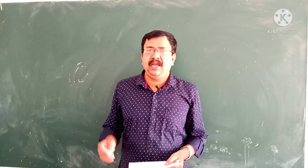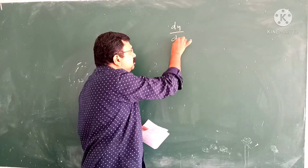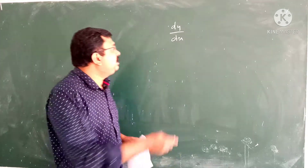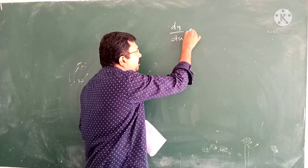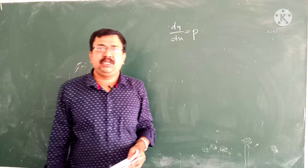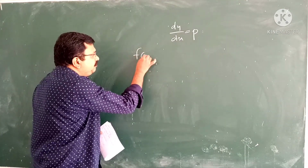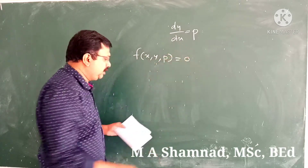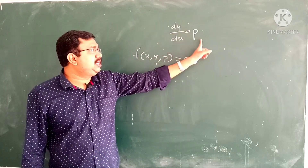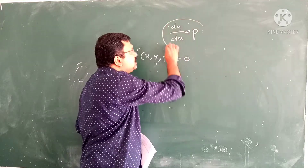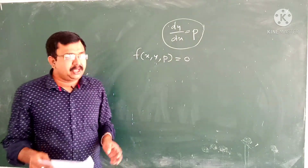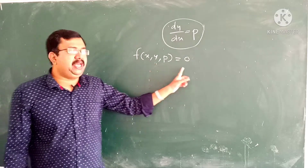The differential equation will involve dy by dx in higher degree. Suppose that dy by dx is equal to P. Then the differential equation will be of the form f of x, y, p equal to 0. Remember that dy by dx is denoted by the letter P.